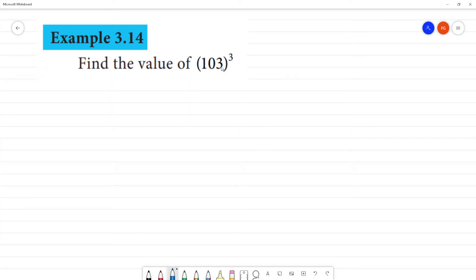Find the value of 103 cubed. 103 is 100 plus 3, so we need to find 100 plus 3 the whole cube.